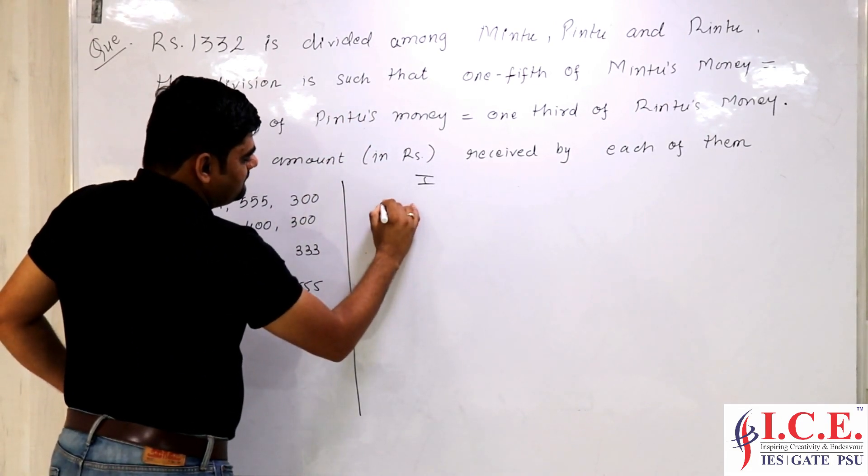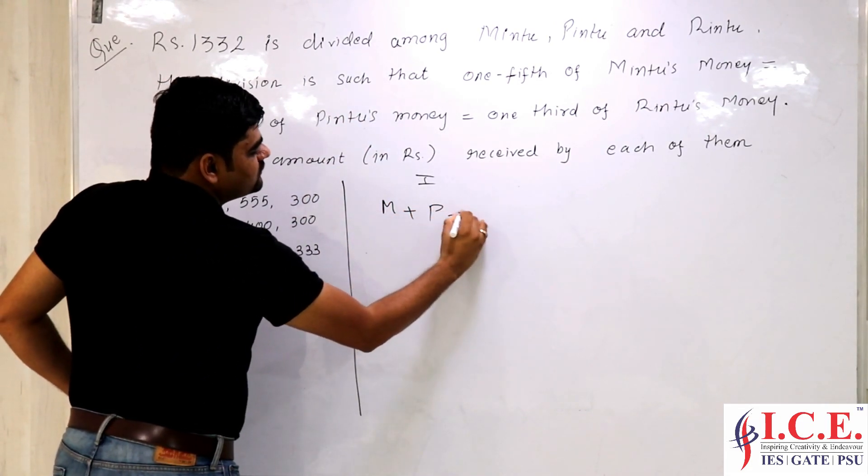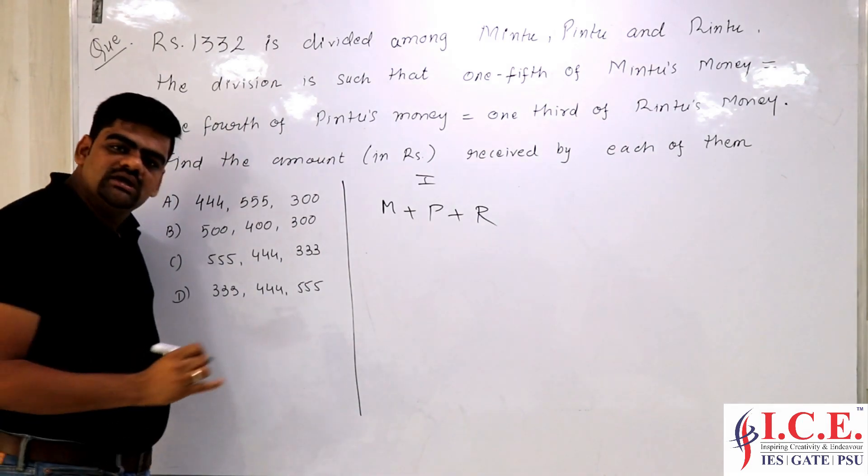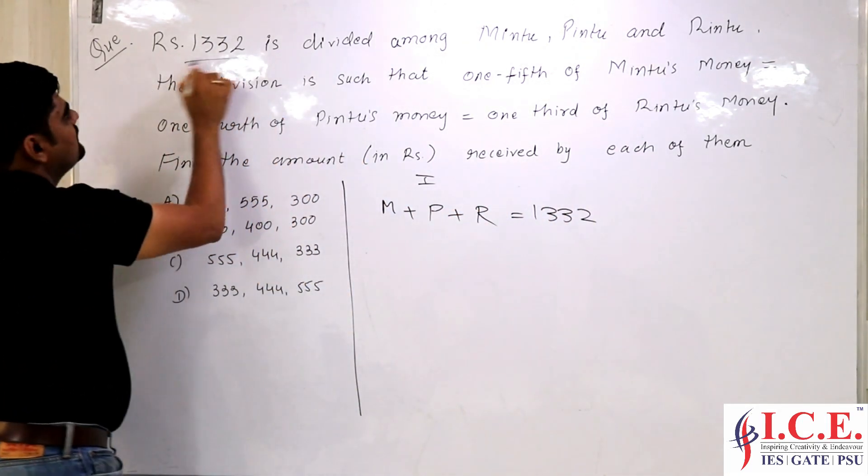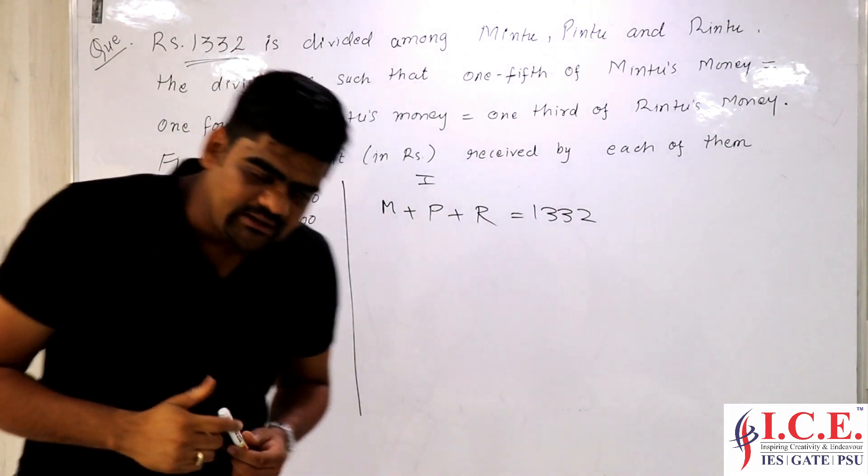He is saying that Mintu's money plus Pindu's money plus Rindu's money is going to be equal to 1332. That is given in the equation. That is the first equation which we are getting.